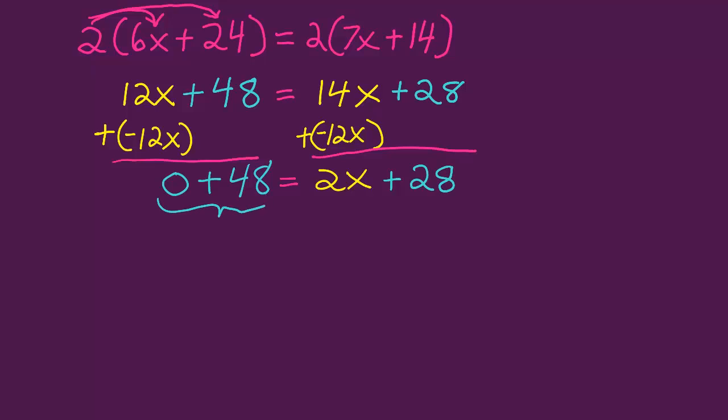Combining the 0 and the 48, I get 48. 0 plus 48 is 48. 48 equals 2x plus 28.